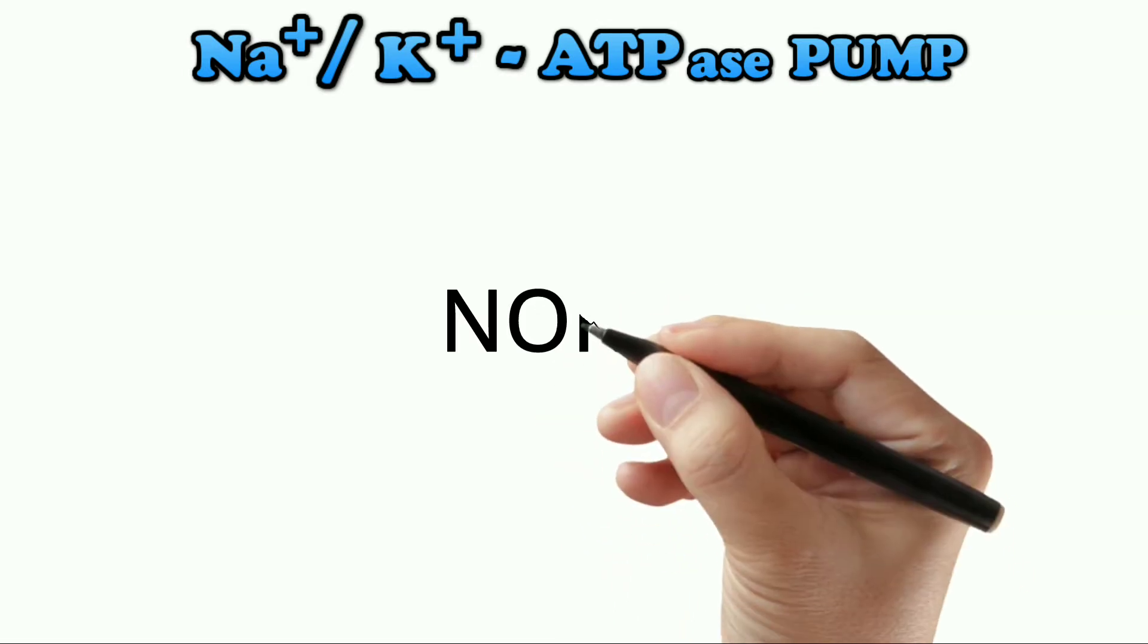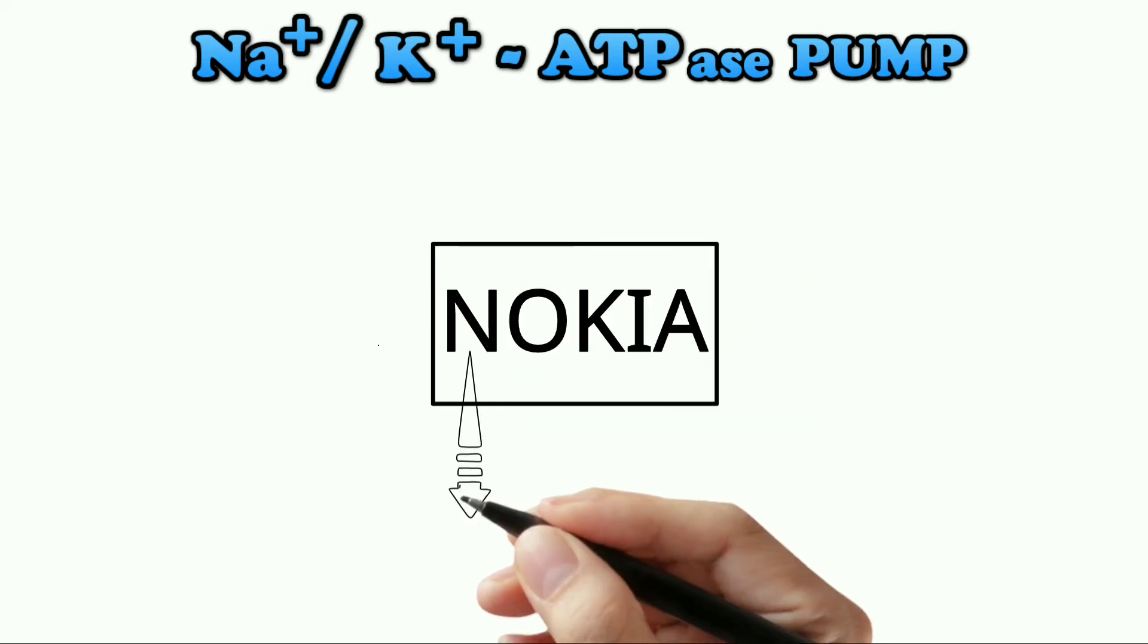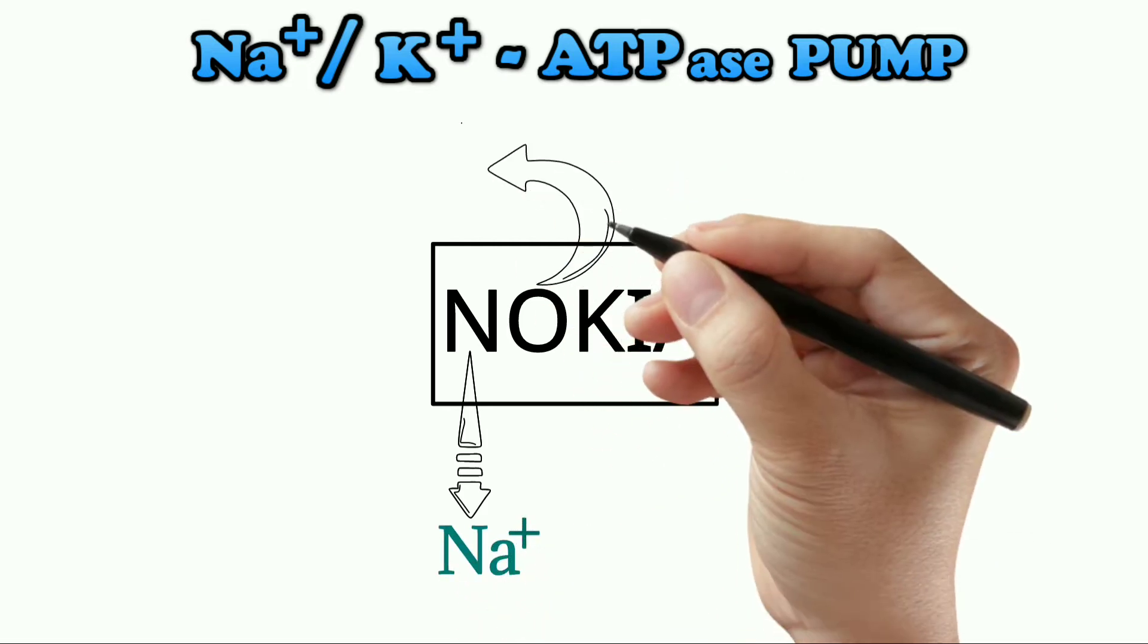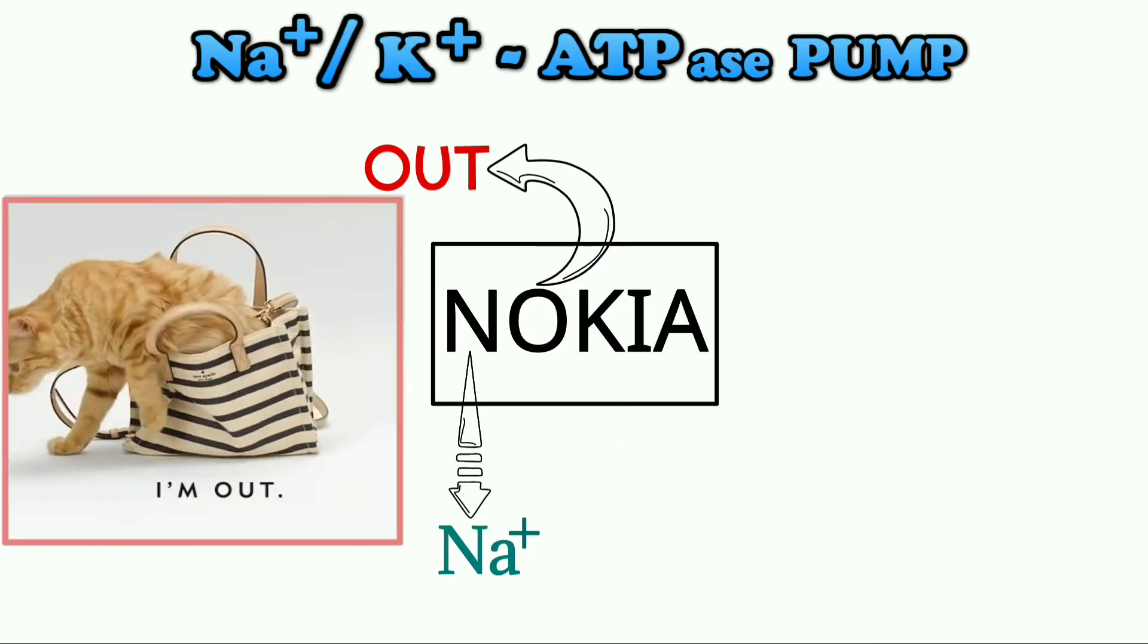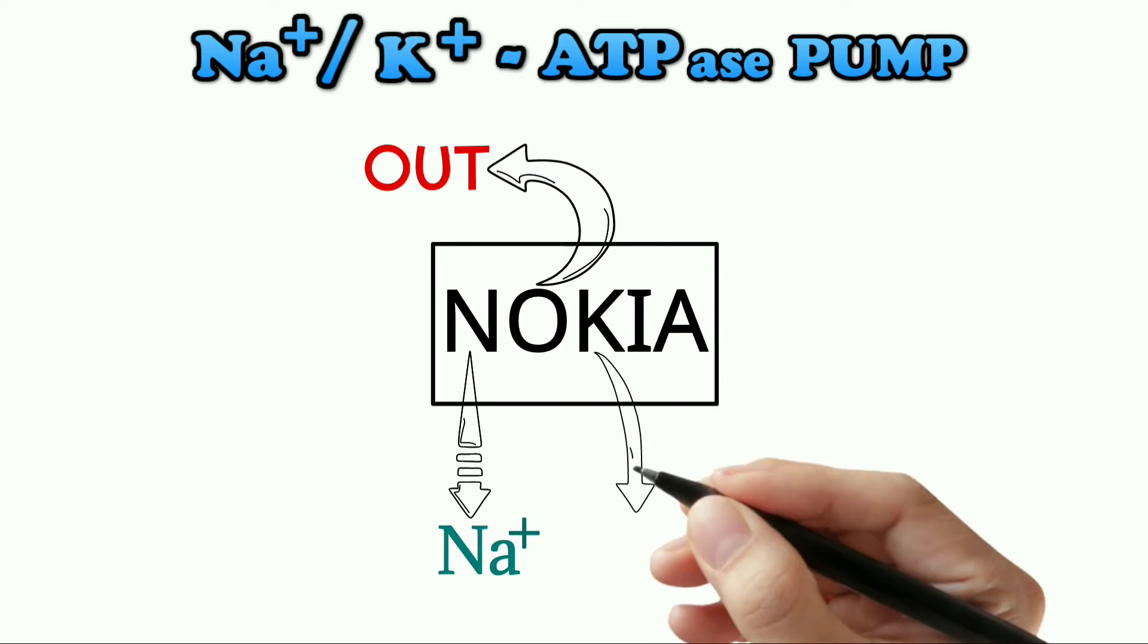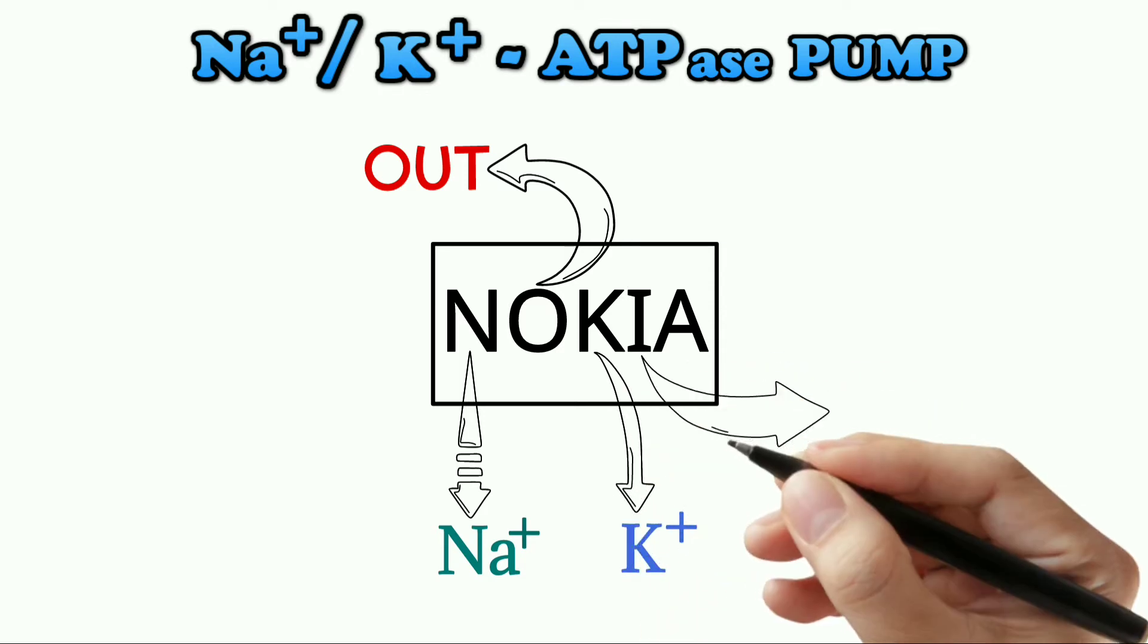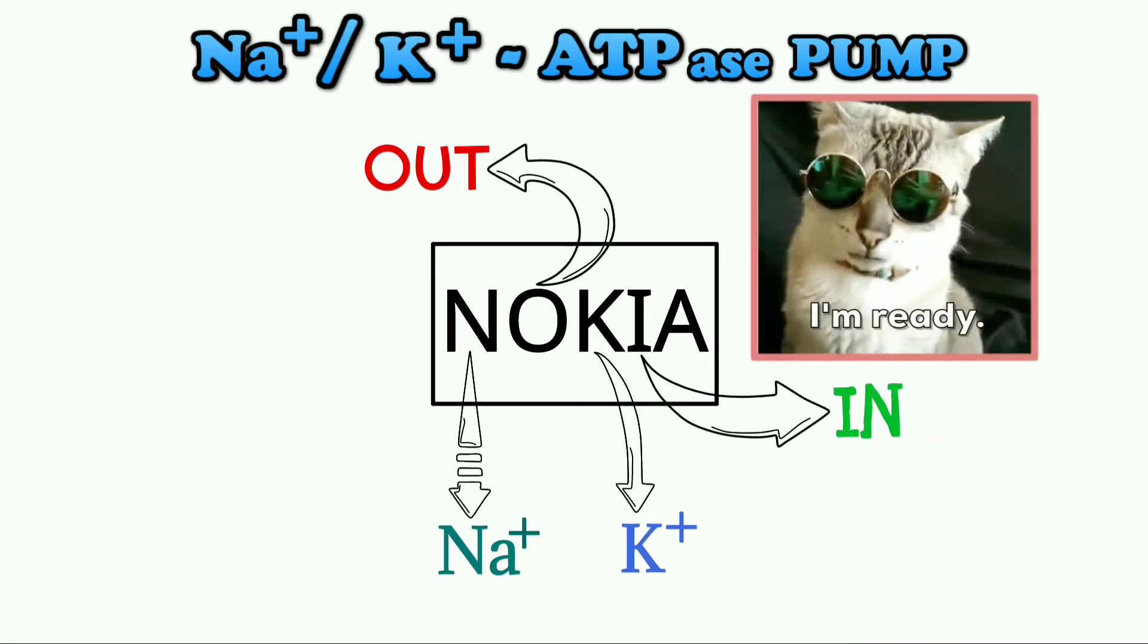The best mnemonic for this pump is NOKIA. N stands for Na+, that is sodium ion, and O is for out. Hence remember that sodium goes out. K denotes K+, that is potassium. I is for in or inside, so potassium ions come into the cell.